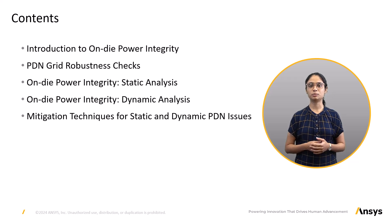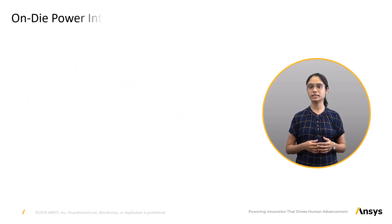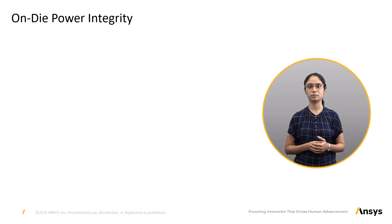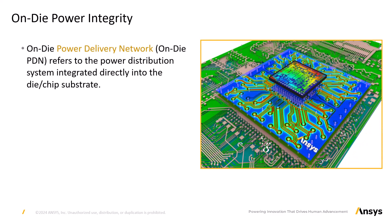Let's commence our exploration of the world of on-die power integrity. In the previous module we discussed various components of a system including the die, package and PCB. Now we will narrow our focus to the power integrity of the die alone. The die is the fundamental element of integrated circuits. It comprises active transistors that require power to operate. Thus power distribution systems are integrated to supply power to the transistor terminals. This is known as on-die PDN.